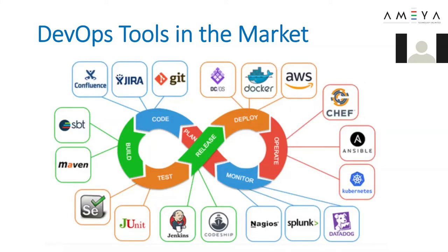Jenkins played a vital role in automation deployment before DevOps and cloud came into picture. Jenkins handles the release. Followed by deployment, which is done by Docker, AWS, or any cloud technology. For operational tasks, tools like Chef, Ansible, or Kubernetes are used — these are configuration-related tools. Once configuration is done, you monitor your application in production using tools like Splunk and Datadog, which keep monitoring your application and raise an alarm to notify the corresponding team if anything goes wrong.